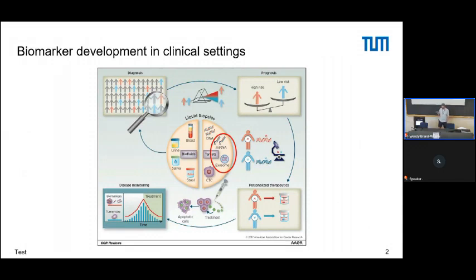Just a quick recap — you might recognize this slide from Michael's talk. What we focus on in our lab are two things: the first is biomarker detection, mostly in clinical samples, and we do this mostly in the small RNA sequencing space and in the extracellular space. The other focus is the standardization and improvement of methods.